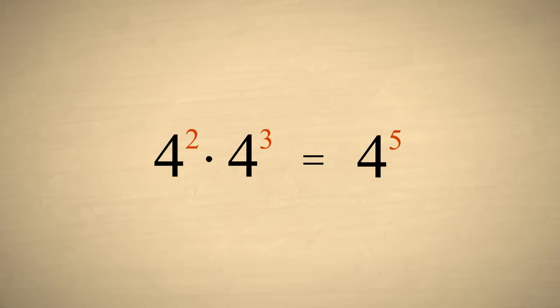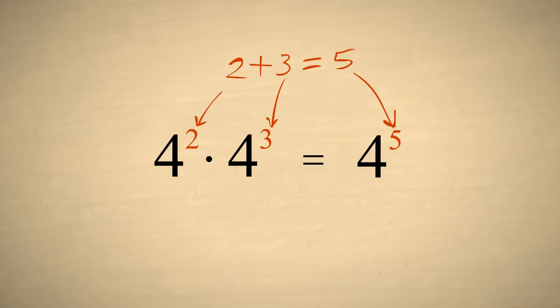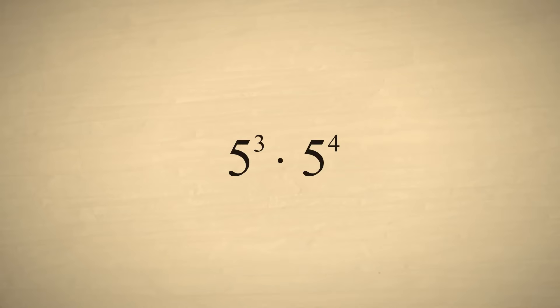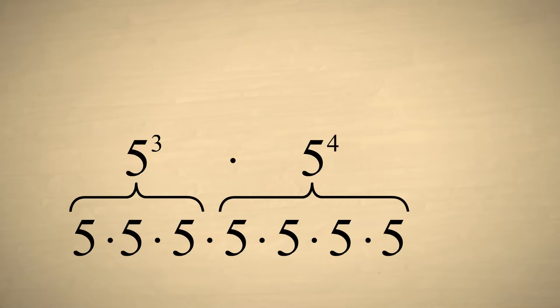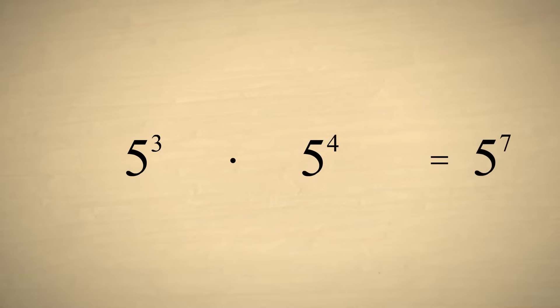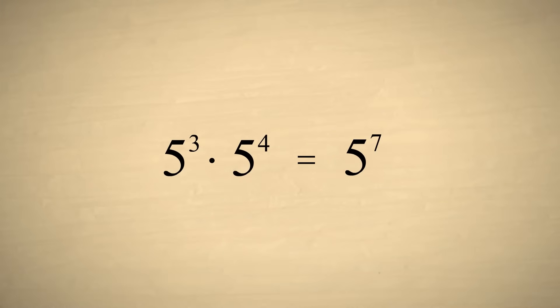Notice that we can get this result by simply adding the exponents. This is true any time we multiply exponential expressions with the same base. For example, multiplying five to the third power times five to the fourth power is the same as multiplying seven fives, which is five to the seventh power. Once again, we get this result by adding the exponents.